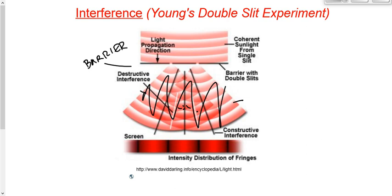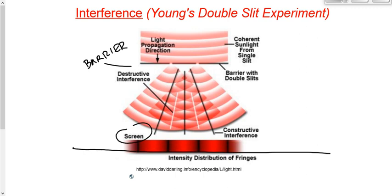With water we can see the interference; with light we can't. So what we usually do to observe the light interference pattern is set up a screen — a piece of paper, cardboard, or whatever — down here that acts as a screen. Now, if we get an area of constructive interference in the middle, that means brighter light — bigger crests and bigger troughs — so on the screen, in that area of constructive interference, we get what we call a bright spot.